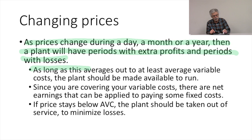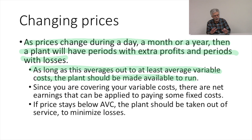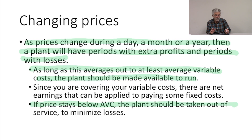As long as this averages out, the plant should be made available to run. Since you're covering your variable costs, there are net earnings that can be applied to paying fixed costs whenever the price is above your variable costs. If the price stays below average variable costs for long periods of time, then the plant should probably be taken out of service to minimize losses.